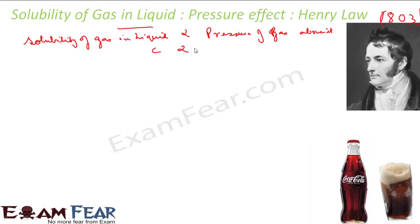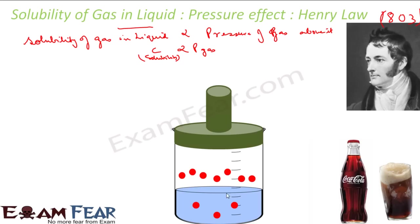If C is solubility, then C is directly proportional to the pressure of the gas. To illustrate this, consider a beaker with some gas molecules. The red ones represent carbon dioxide gas, and the liquid is water. We are understanding the solubility of carbon dioxide in water.